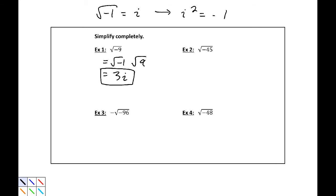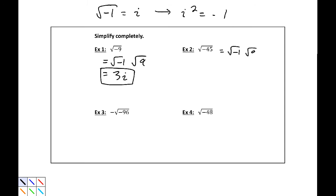For example 2, the square root of negative 45. We can write that as the square root of negative 1, and then the largest perfect square that divides into that is 9, so the square root of 9 and then the square root of 5. 9 times 5 is 45. This becomes 3i, the 3 coming from the square root of 9 and the square root of negative 1 being i, so we have 3i root 5.